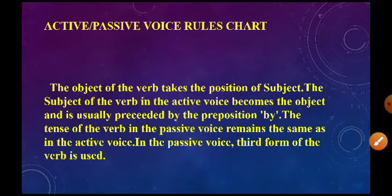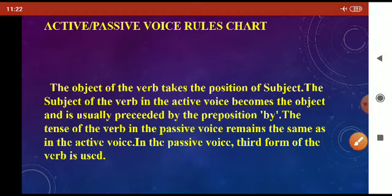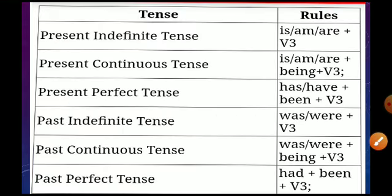Now we have some rules for how we can change an active sentence into a passive one. The object of the verb takes the position of subject. The subject of the verb in the active voice becomes the object and is usually preceded by the preposition 'by.' The tense of the verb in the passive voice remains the same as in the active voice. In the passive voice, the third form of the verb is used. These rules are presented here in tabular form.